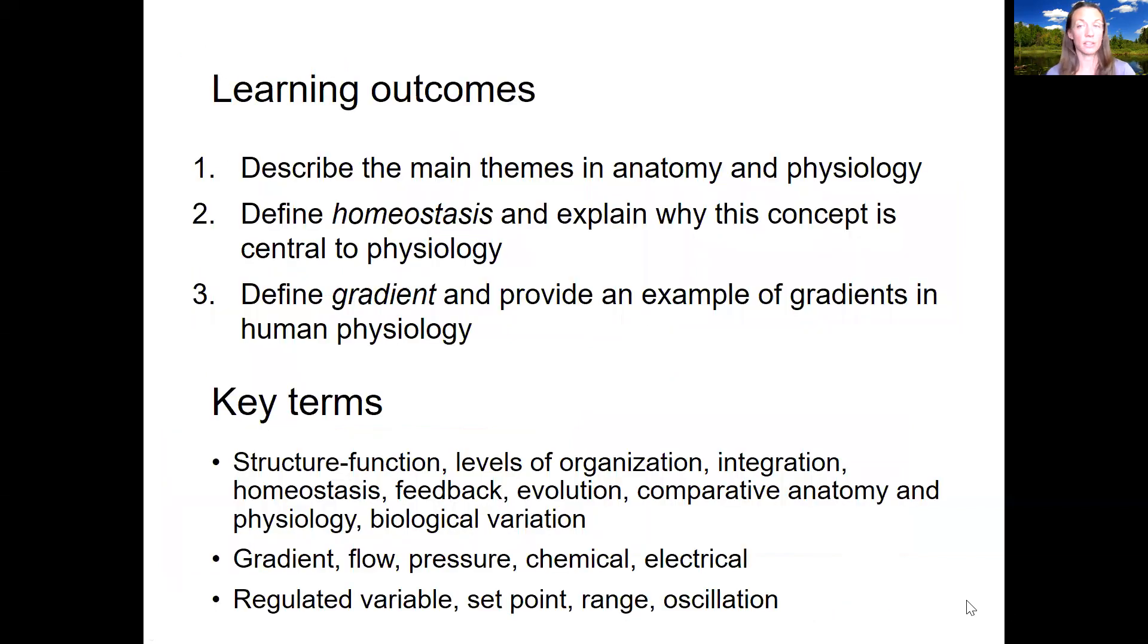So these are the learning outcomes I covered in this mini lecture here. So the main themes in anatomy and physiology describe those themes and they're basically listed here what those themes were. Define homeostasis and explain why this concept is central to physiology. We'll talk a little bit more about homeostasis. I will talk about that more also next week. These are some of the terms for homeostasis down here at the bottom that I want you to know. Again, will be reviewed next week. And then define gradient, provide an example of gradients in human physiology. So these are the terms for that here and three of the examples I talked about. So I am going to post these learning outcomes on the learning outcome page so you can refer to them there as well. And please let me know if you have any questions.